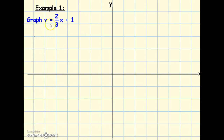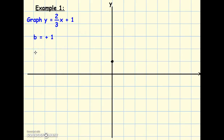First equation: graph y equals two-thirds x plus one. First thing we want to do is figure out our y-intercept. Our y-intercept is always b — it's at the end. Since it says plus one, our pluses mean positive, so our y-intercept is at positive one. We always start at the origin; the y-intercept is positive one, so we have a spot right there. Now we have one point and we know how things change because we have a slope. Our slope is two-thirds, so positive two over positive three — rise over run — meaning we go up two in the y-direction and over three in the x-direction.